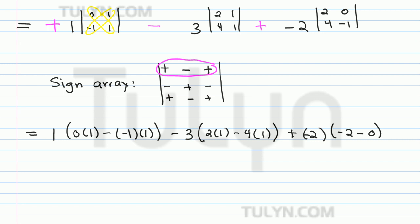Now we have something a little less messy. 0 times 1 is 0, so this becomes 1 times negative 1, which is just 1. The second term simplifies to 3 times 2 minus 4, which is negative 2 in this parenthesis. Finally, for the last one, we get minus 2 minus 0, which is just minus 2.